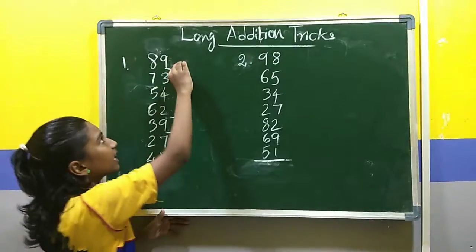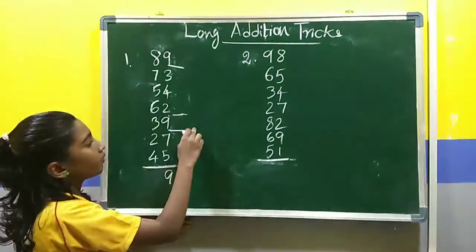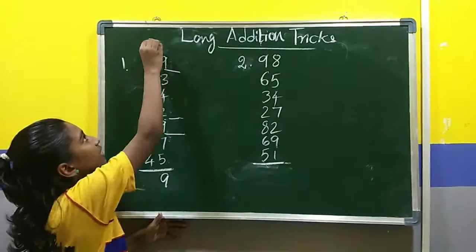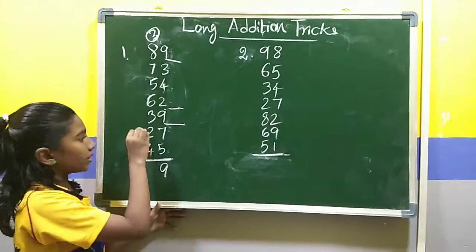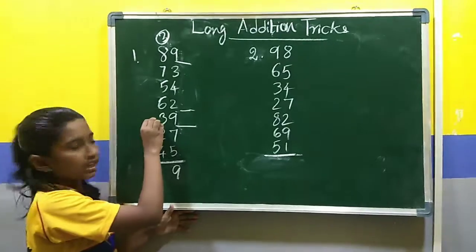7 plus 3, 10. 10 is dropped here. 9. We have got 3 tens. 3 carried over here. 4 plus 2, 6. 6 plus 3, 9.